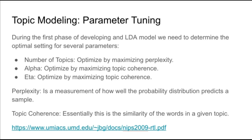Perplexity describes how well a particular probability distribution or probability model predicts out-of-sample results. The other two parameters, alpha and eta, I chose to optimize using topic coherence.